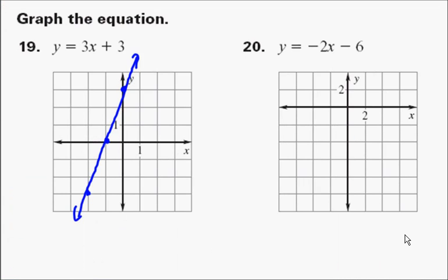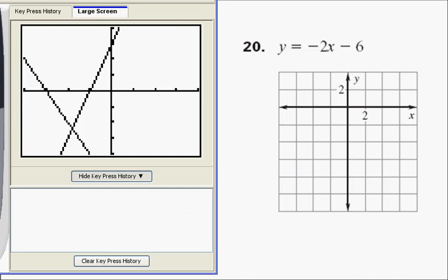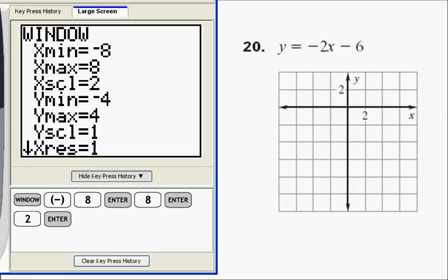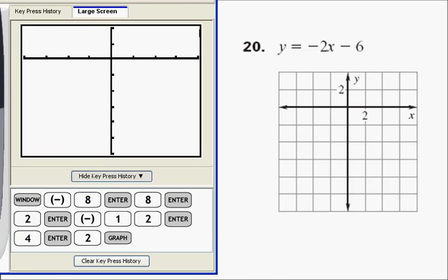I could also reset this window. And notice this window now goes by twos. So now that I'm set up, I'll hit the window. Notice the x coordinates go from negative 8 to positive 8 because they go by twos. So now here in the x scale, I put a 2. And the y coordinates go from negative 12 to positive 4, and they also go by twos. So when I hit the graph button here, I get a screen that looks exactly the same.